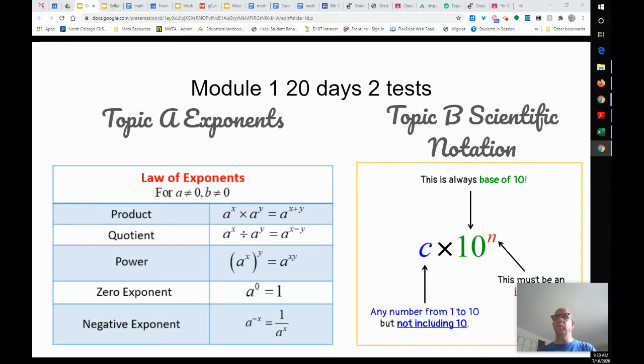We're going to start with module one. It's going to be 20 days and two tests. We're going to start with the law of exponents. Some people have more laws, some people have less laws. We're going to look at them, and they're very logical. We're going to figure them out. Then scientific notation takes that law of exponents and teaches us how to use that power to describe really, really small things or really, really big things.